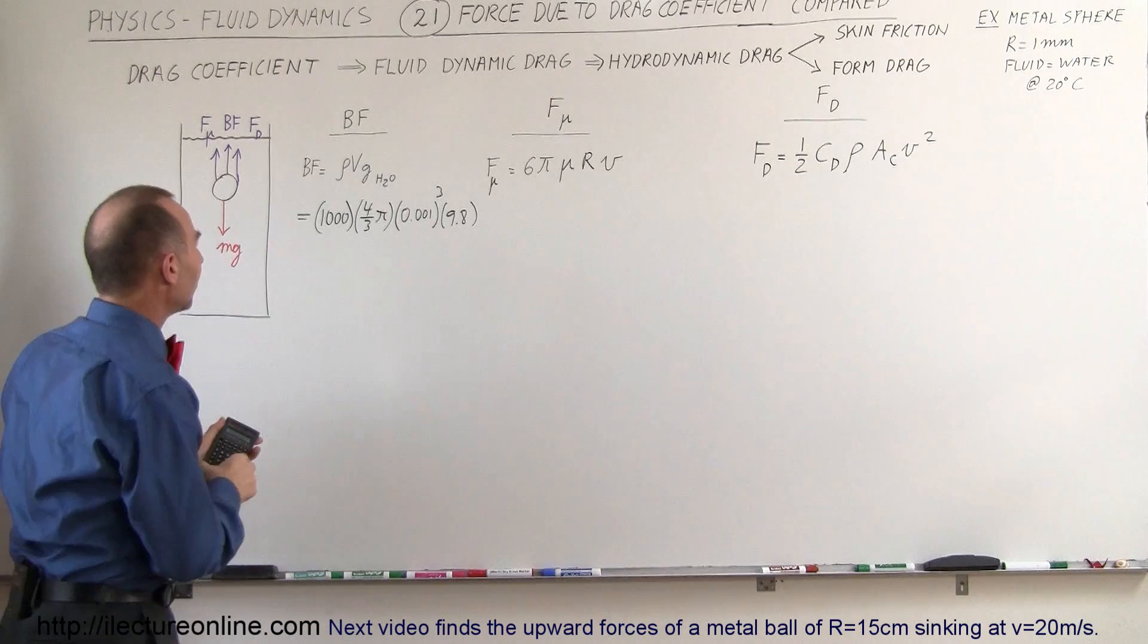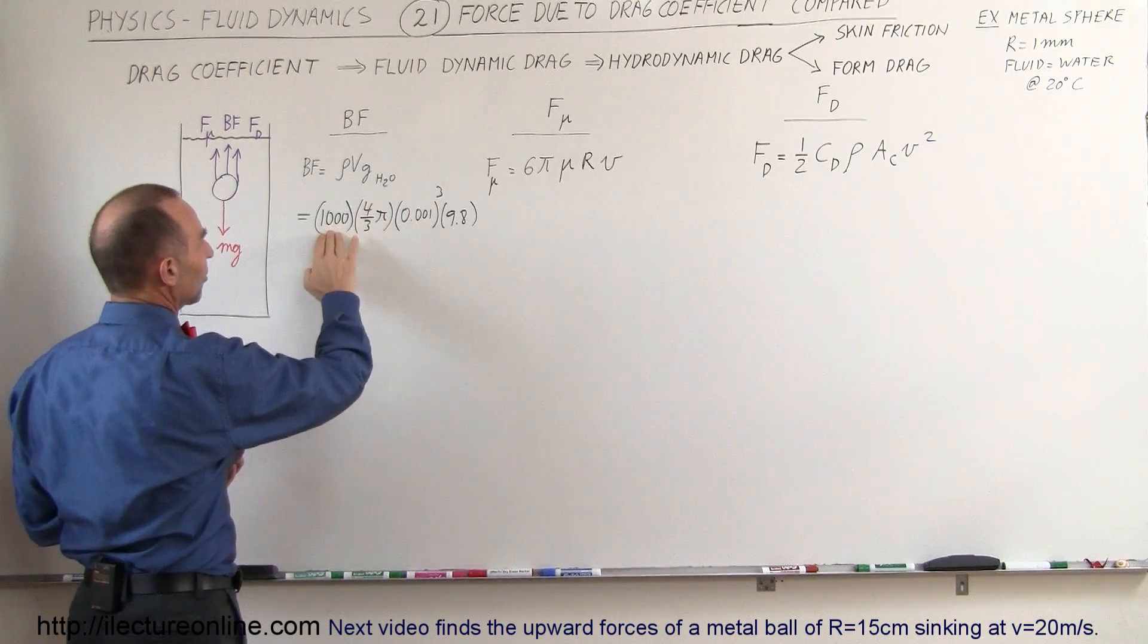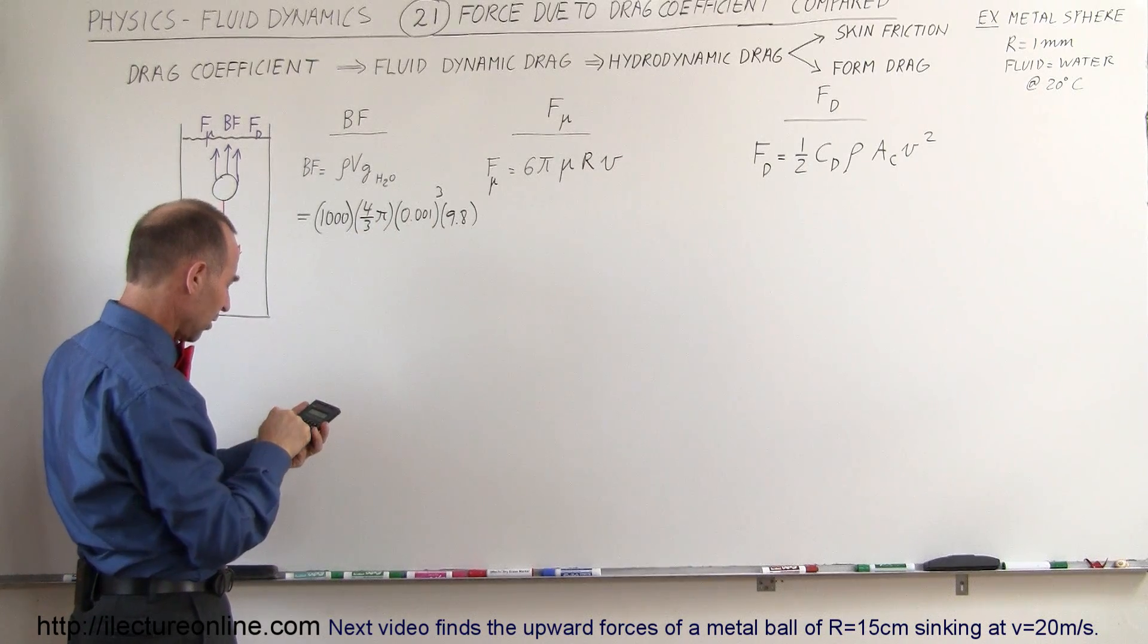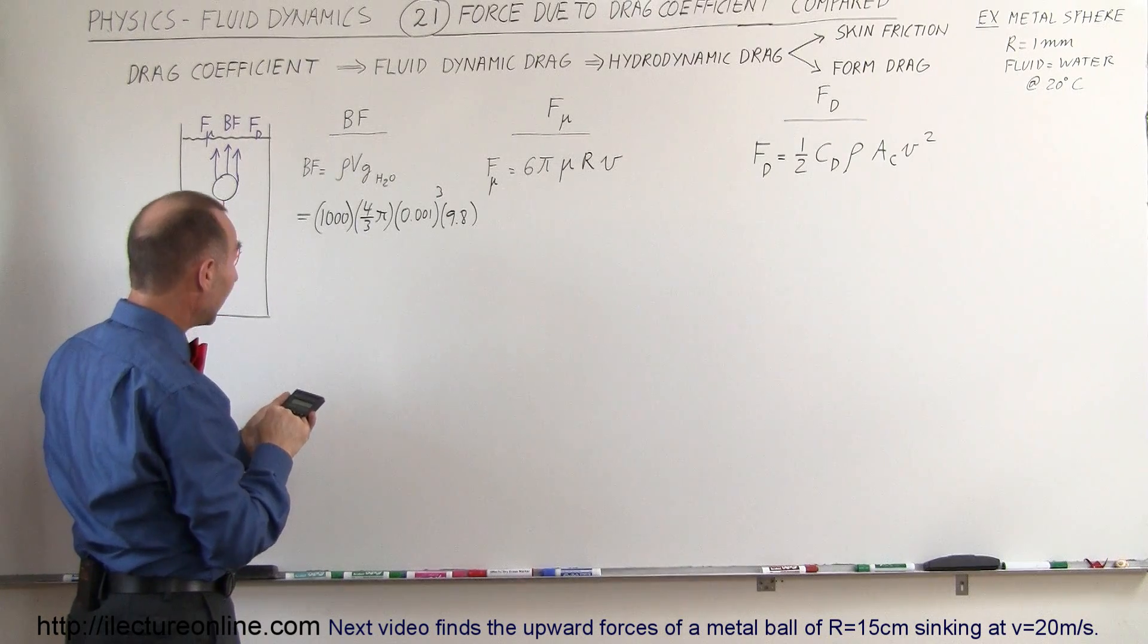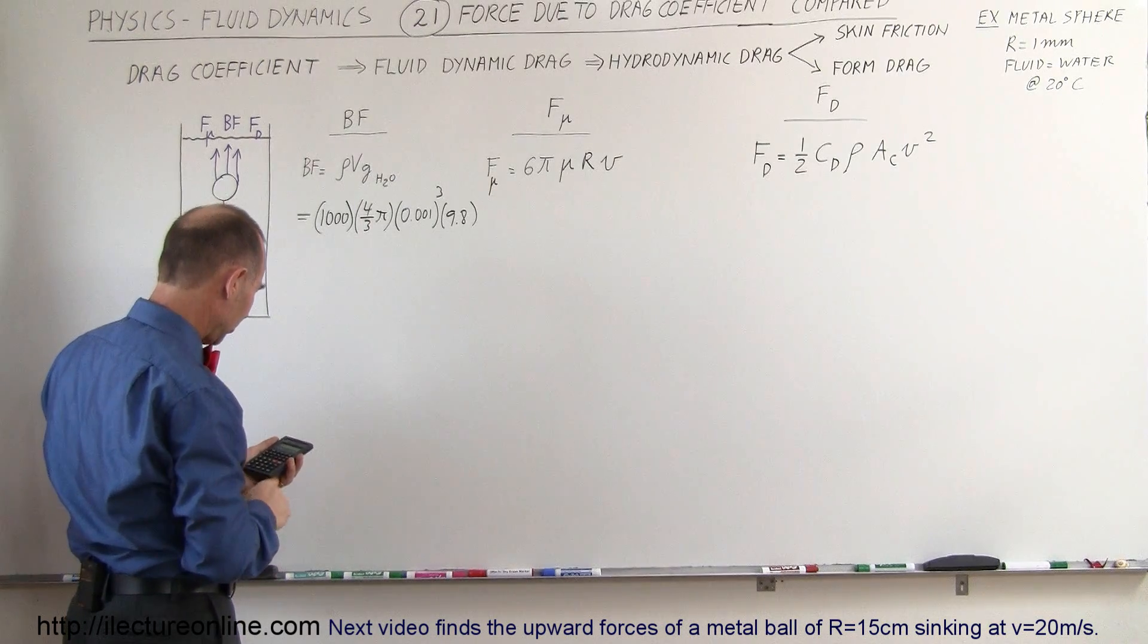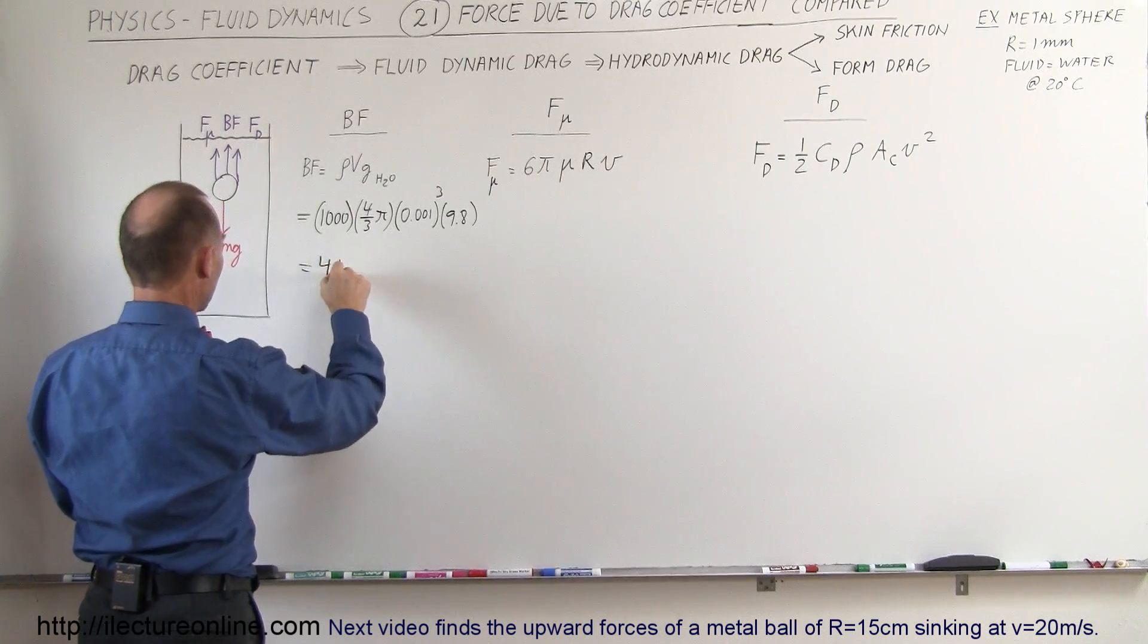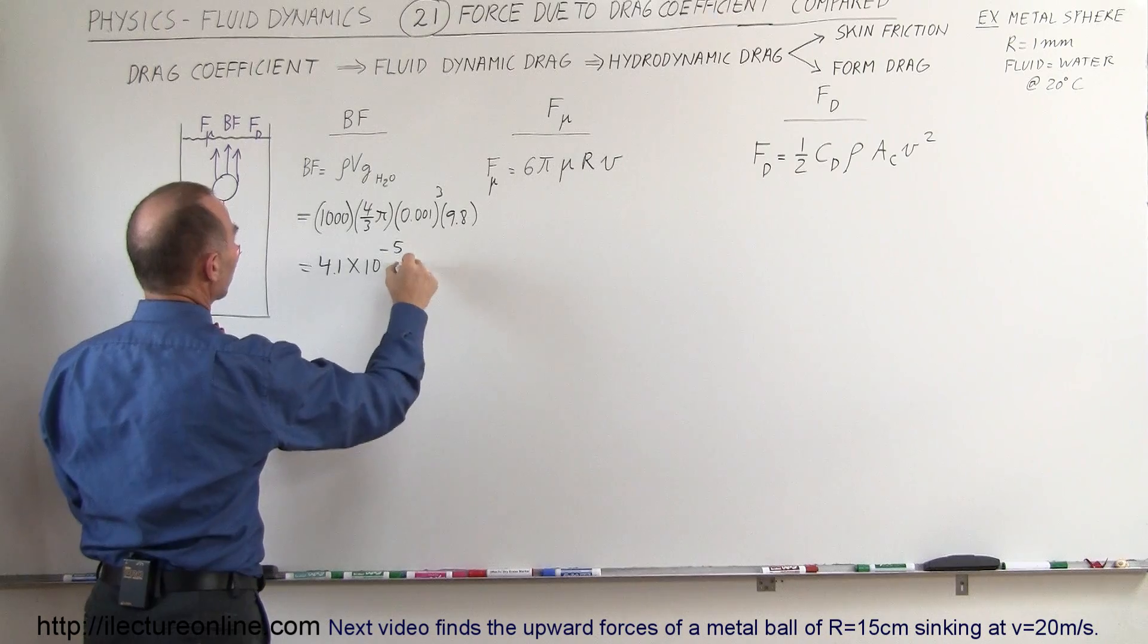So let's find out how big that is. With 0.001 cubed times a thousand, that would be 0.001 squared times 4 divided by 3 times π times 9.8 equals, and so you can see that would be a force of 4.1 times 10 to the minus 5 Newtons.